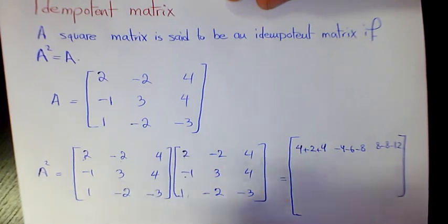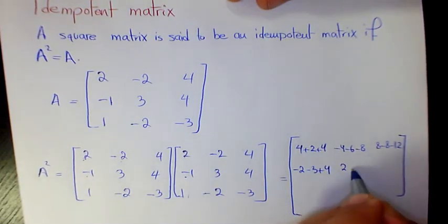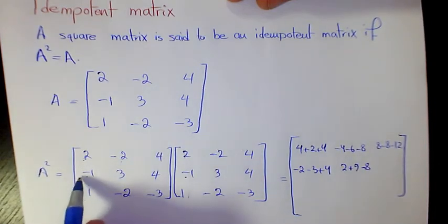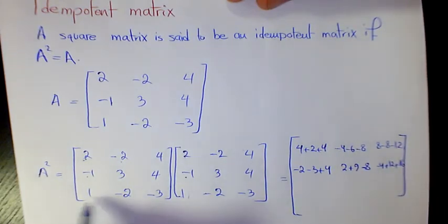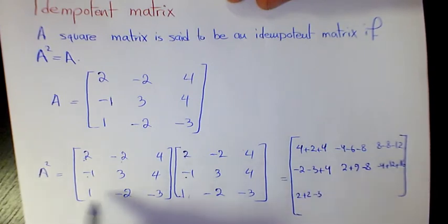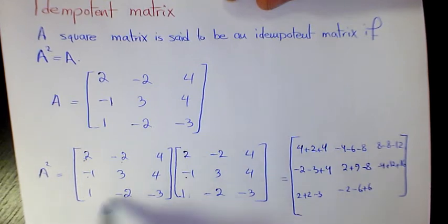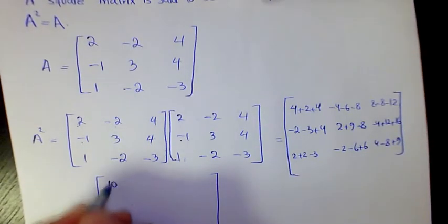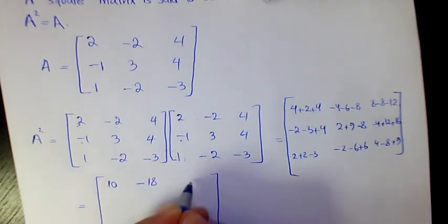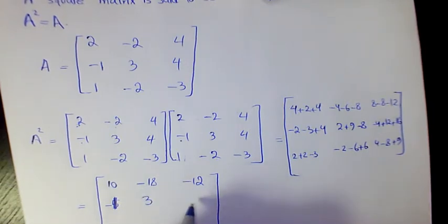Then we have two, negative two, and four times this column: eight minus eight minus twelve. Then this row times this column gives negative two, negative three, and four. Negative one times negative two is two, plus nine minus eight. Next: negative four plus twelve plus sixteen. Then two plus two minus three, negative two minus six plus six, and finally four minus eight plus nine.